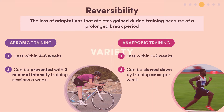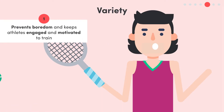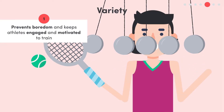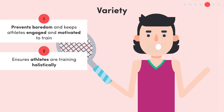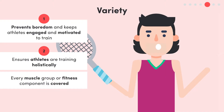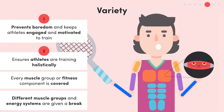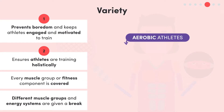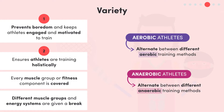Next we have variety. This principle serves two purposes. Firstly, it prevents boredom and keeps athletes engaged and motivated to train. Secondly, it ensures they are training holistically, meaning every muscle group or fitness component is covered and different muscle groups and energy systems are given a break. Aerobic athletes would alternate between different aerobic training methods, as simply running for 30 minutes every session would cause disinterest and limited improvement. Similarly, anaerobic athletes would alternate between different anaerobic training methods.